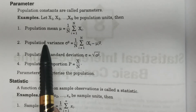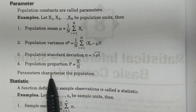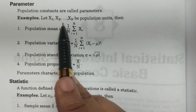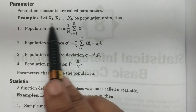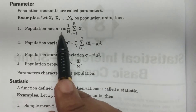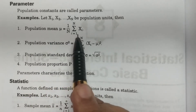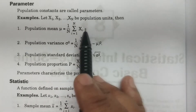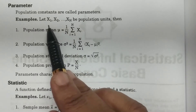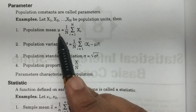Let me give some examples of population parameters. If capital X1, X2, and so on up to capital XN are the population units, then one parameter is population mean mu, which is equal to 1 by capital N, summation i equals 1 to capital N of Xi. So if you calculate the average for all observations, that is nothing but the population mean mu.